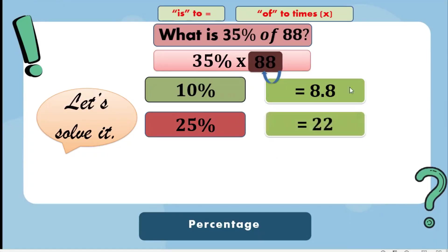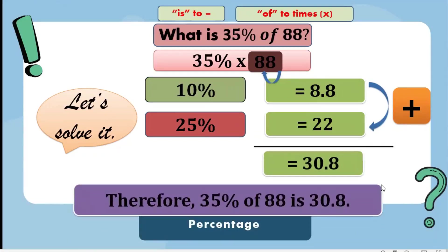Just add it to 8.8, which is the 10% of 88, the answer is 30.8. Therefore, the answer in 35% of 88 is 30.8.